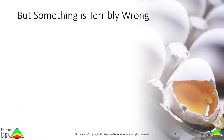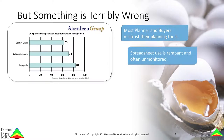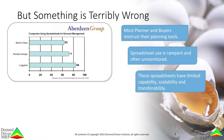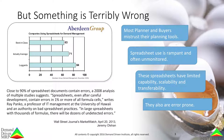But something is terribly wrong. The people that use MRP systems don't trust them. The use of spreadsheets to work around MRP calculations is rampant. Several studies have shown that on average, 70% of companies admit to using spreadsheets to augment or supplant the MRP planning equations, despite them having limited capability, scalability, and transferability. They are also error-prone, with nearly 90% of spreadsheets containing some form of error.